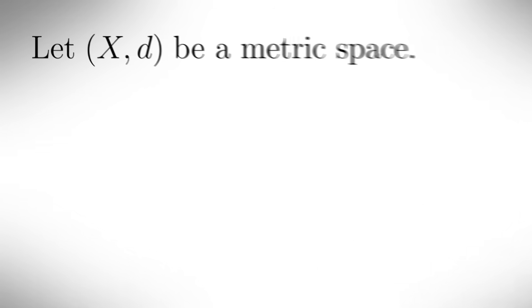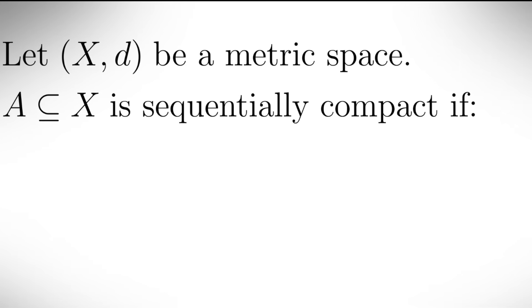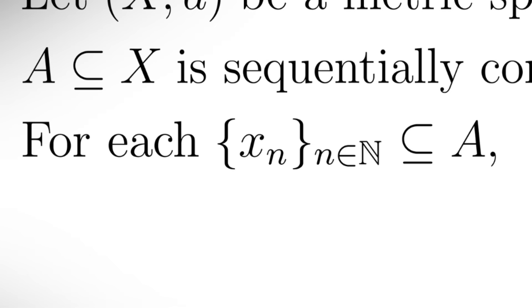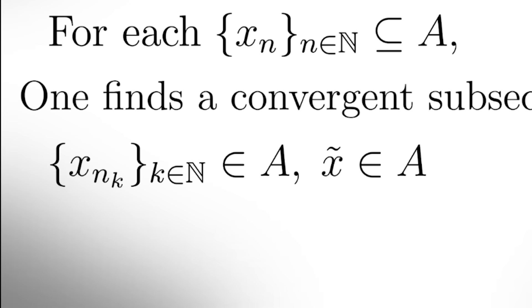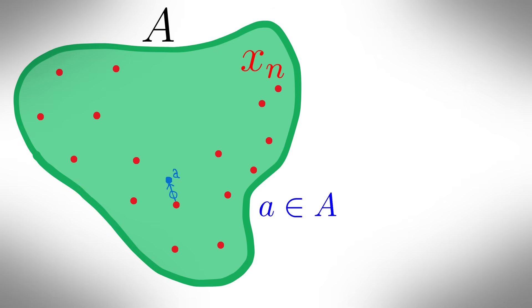Compactness. If the metric d acting on a set x forms a metric space, then a, which is a subset of x, is called sequentially compact if for each sequence x sub n, where n is a natural number, which is a subset of a, one finds a convergent subsequence, x sub n sub k, where k is a natural number where the limit x tilde lies in a. This means that inside a set a we have infinitely many points given by a sequence x sub n, but each point will converge to a single point still in a.